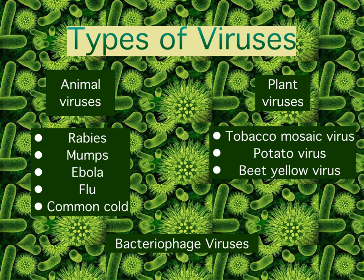There are three types of viruses: animal, plant, and bacterial. Animal viruses are viruses that infect man and animal cells that possess the genetic material RNA and DNA. Some examples of animal viruses include rabies, mumps, Ebola, the flu, and the common cold. Plant viruses are viruses that infect plants whose genetic material is RNA. Some examples of plant viruses are the tobacco mosaic virus, potato virus, and the beet yellow virus. Bacterial viruses are viruses that infect bacteria and contain DNA as their genetic material. Typically, they will only attack one species of bacteria.